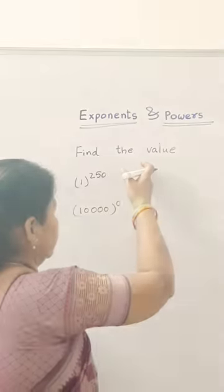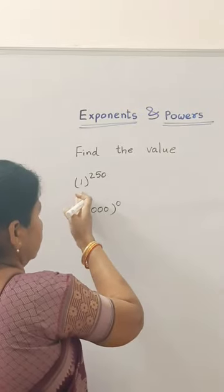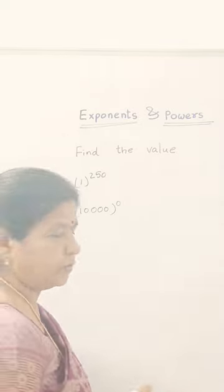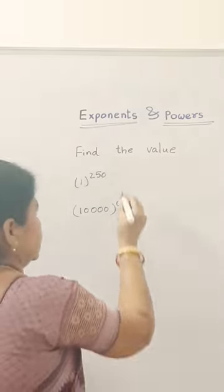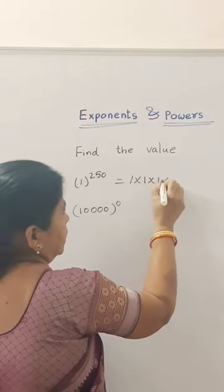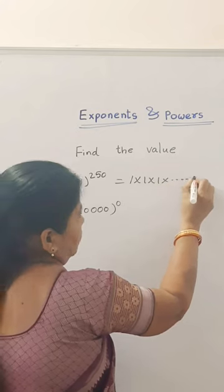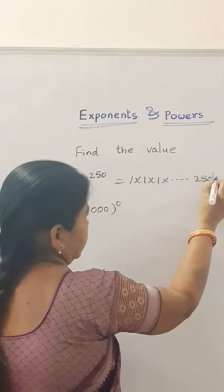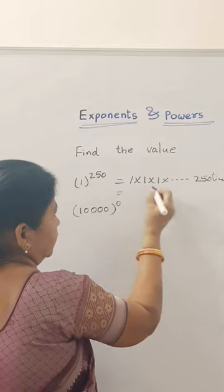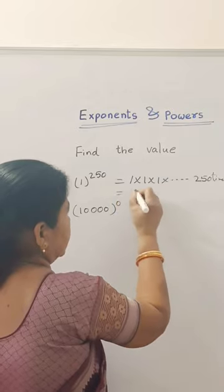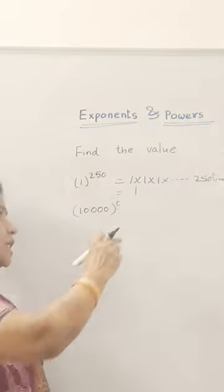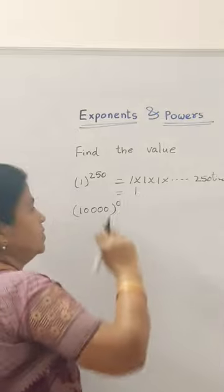Find the value of 1 raised to the power of 250. So, what we are writing? 1 into 1 into 1 — how many times? 250 times. What will happen? 1 into 1 into 1, we get 1 only. So, 1 multiplied 250 times gives us 1.